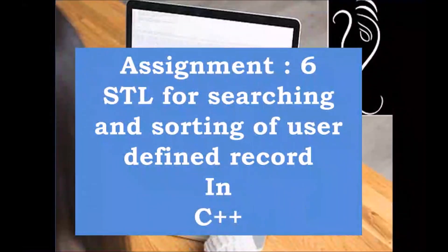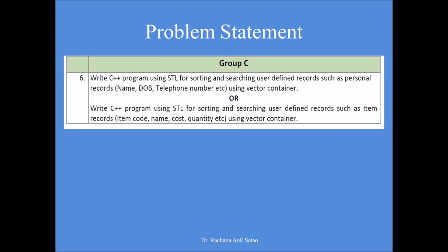Let us start today with assignment number 6: Standard Template Library for searching and sorting of user-defined records in C++. We have to create a user-defined record and perform searching and sorting using STL. We are going to use vectors to implement this assignment. This is group C, sixth assignment in OOP.